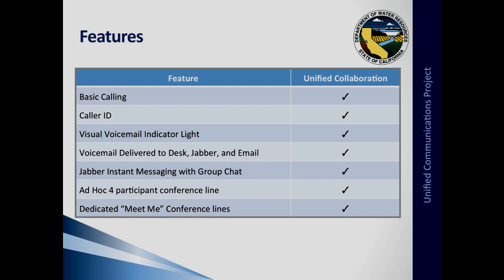You now have Jabber instant messaging and group chat available. You also have an ad-hoc multi-participant conference line, meaning from your phone you can initiate a conference call with up to three additional participants. There are also three dedicated Meet Me conference lines for each division, each holding up to 32 callers. The dedicated Meet Me lines for the division can be reserved through Outlook, and only that division can reserve their dedicated lines.